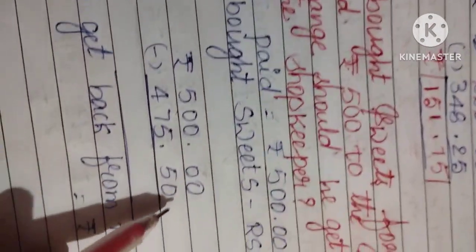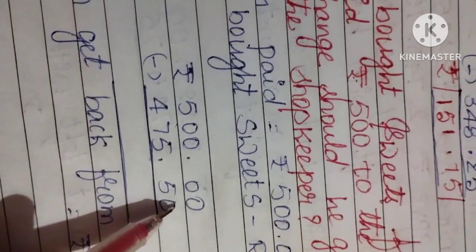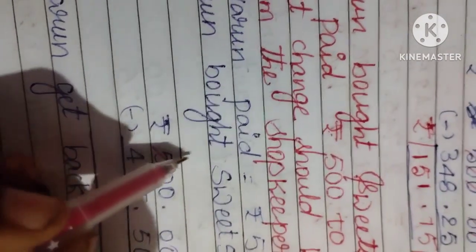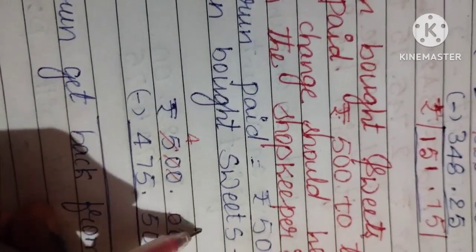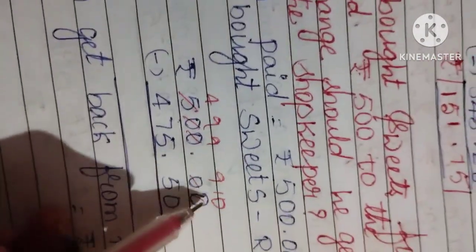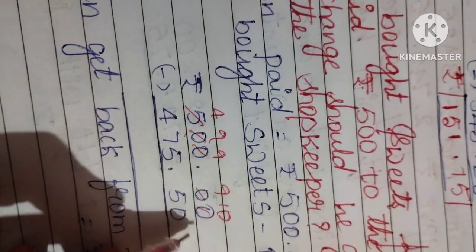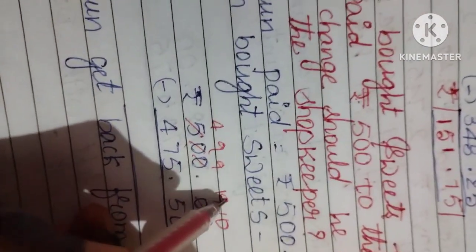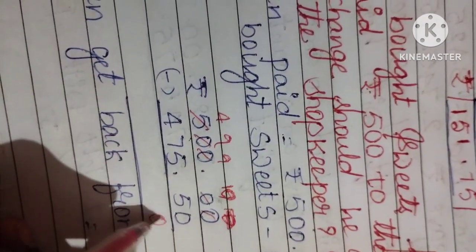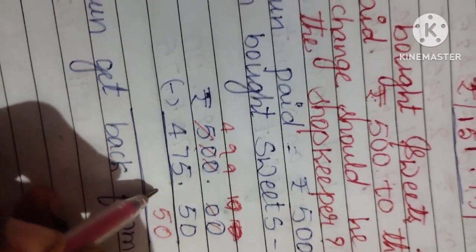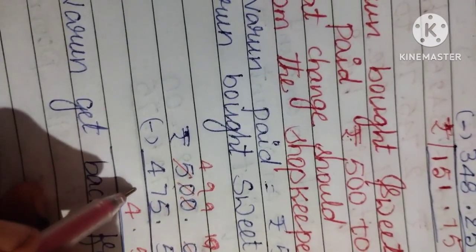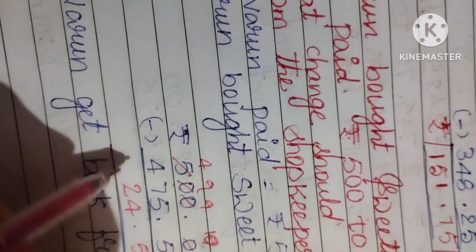See here, 500 he paid already. So you can do subtraction now. From here you can take borrow: 10, 9, 9, 9. No need here. Sorry, here no need, here 10. 0 minus 0 is 0. 10 minus 5 is 5. 9 minus 5 is 4. 9 minus 7 is 2. 4 minus 4 is 0.